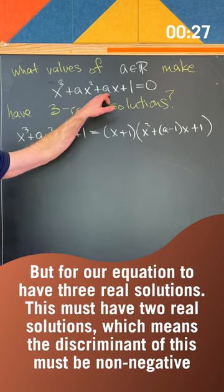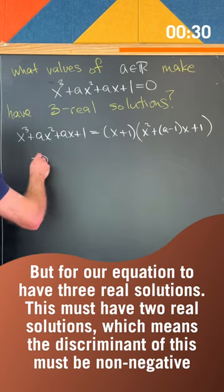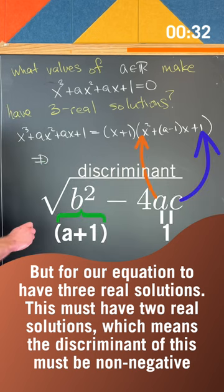But for our equation to have three real solutions, this must have two real solutions, which means the discriminant of this must be non-negative.